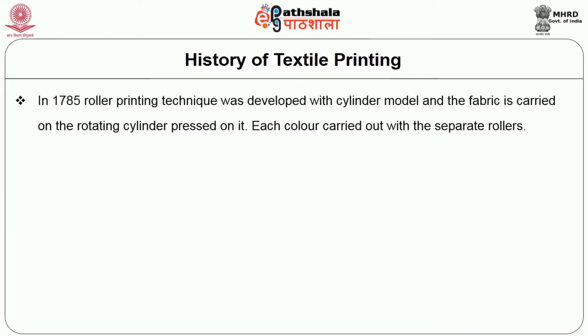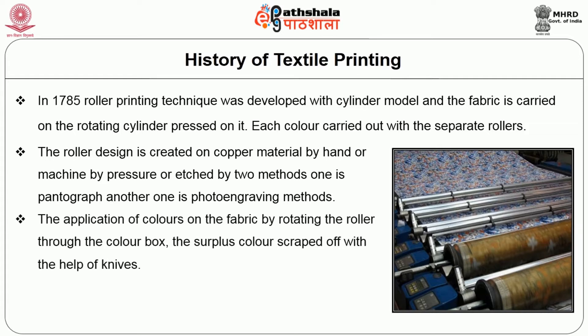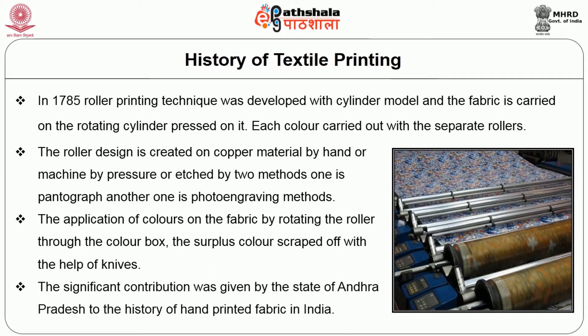In 1718, roller printing technique was developed with a cylinder model, and the fabric is carried on the rotating cylinder. Each color is carried out with separate rollers. The roller design is created on copper material by hand or machine, by pressure or etched by two methods: one is photography and another is photo engraving. Color is applied on the fabric by rotating the roller through the color box, and the surplus color is scraped off with the help of knives.